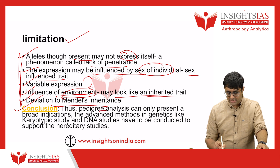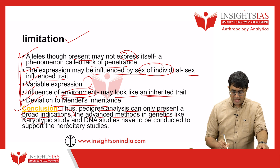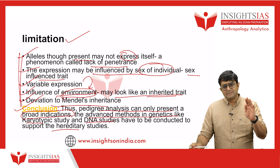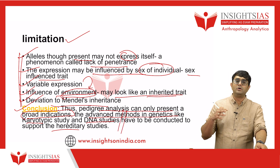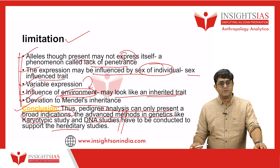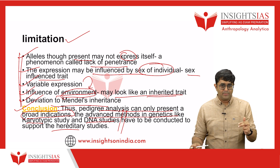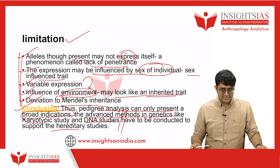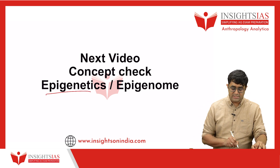In conclusion, pedigree analysis can only present a broad indication. Advanced methods in genetics like karyotyping, DNA studies, and DNA fingerprinting need to be done in order to ascertain genetic principles and inheritance with 100% accuracy. So write about pedigree analysis with context, a diagram, features, applications, limitations, and a futuristic perspective on what else needs to be done alongside pedigree analysis. In the next video we will discuss epigenetics or the epigenome. Thank you for watching.